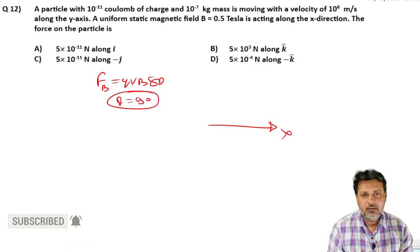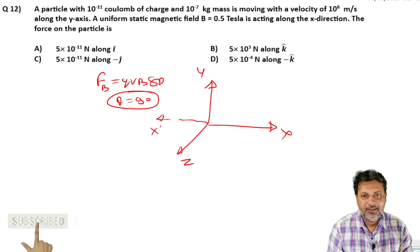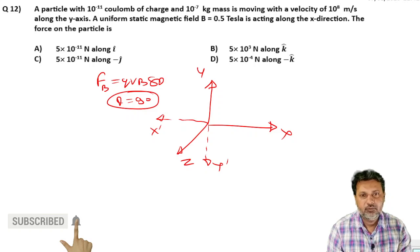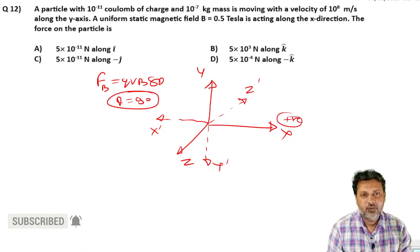Dekho, yeh x-axis, yeh y-axis, theek hai, aur yeh aapka z-axis. To x-dash idhar hoga, x-dash matlab negative. Y-dash niche hoga, y-dash idhar hoga, negative z-dash idhar hoga. Yeh positive x hai, yeh bhi positive hai z aur yeh positive hai. Baaki saare direction ulte negative honge.